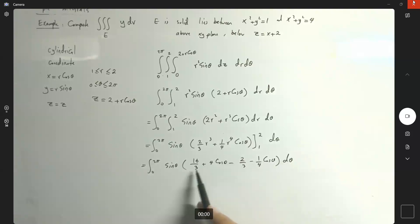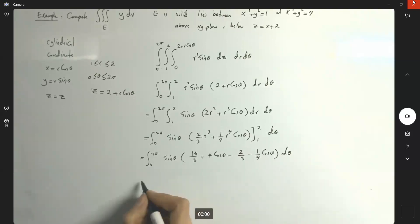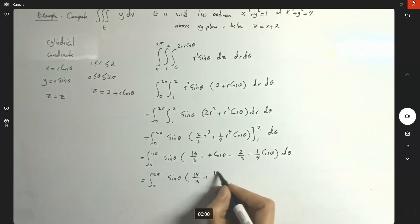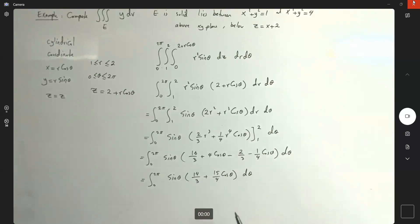Perfect. We can simplify this. We can add this together and then do the computation. This becomes integral 0 to 2 pi sine theta. And here you get 14 over 3 plus 15 over 4 cosine theta d theta.